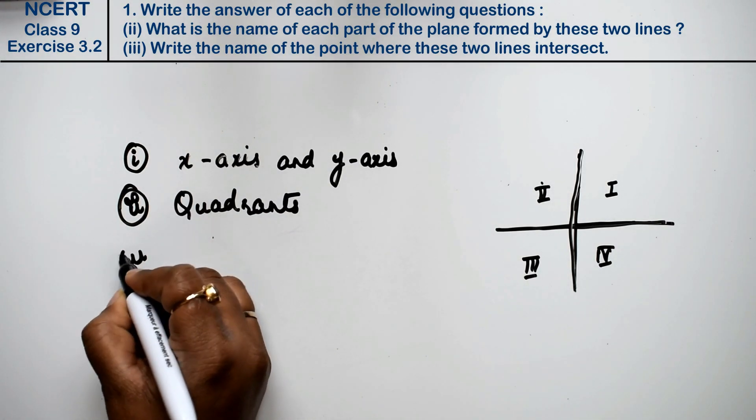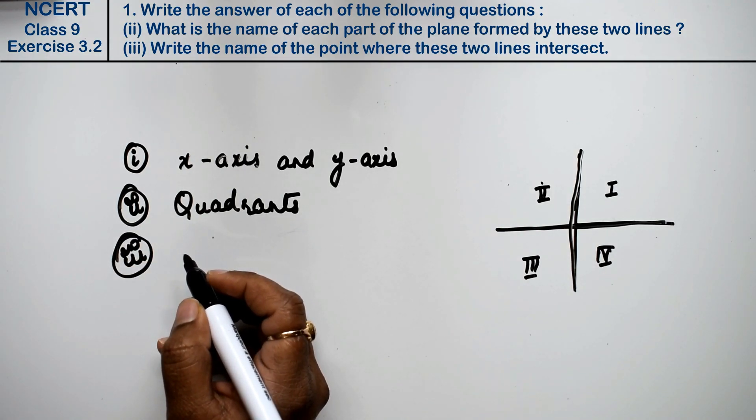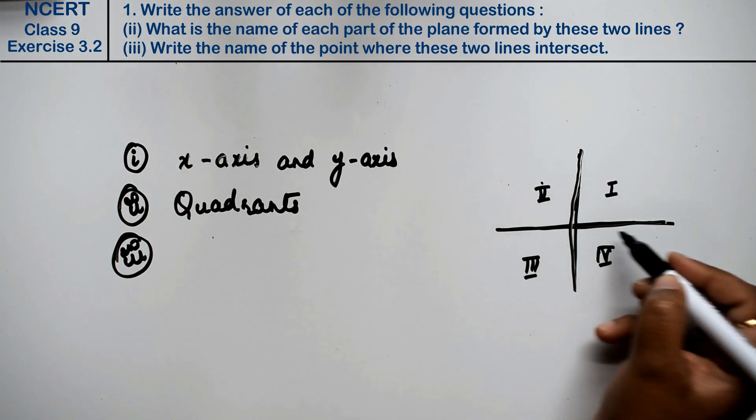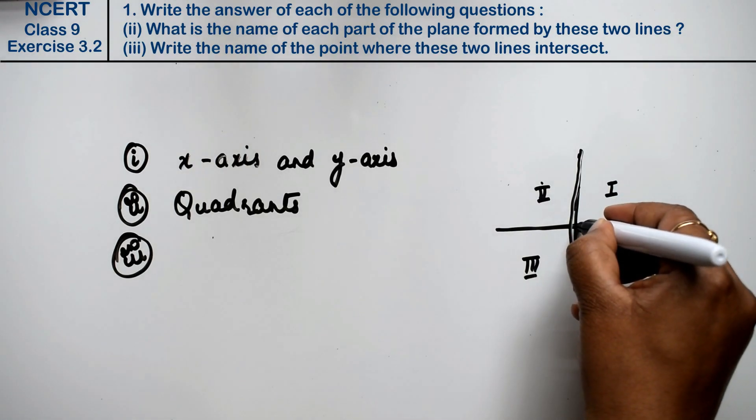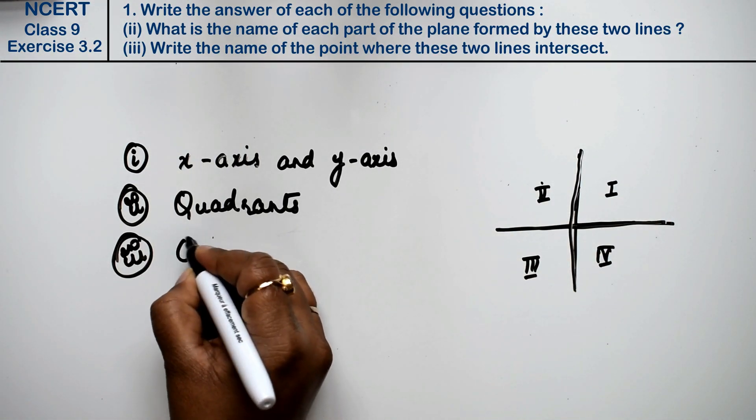Let's do third part. Third part is, write the name of the point where these two lines intersect. These two lines intersect, this is the point. So what do we call this point? It's point origin. Origin, right friends?